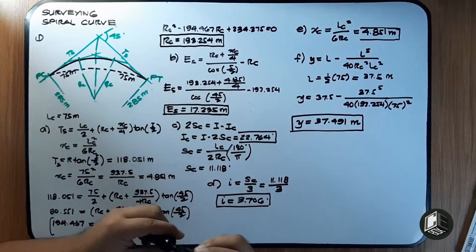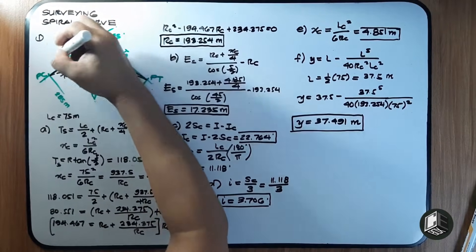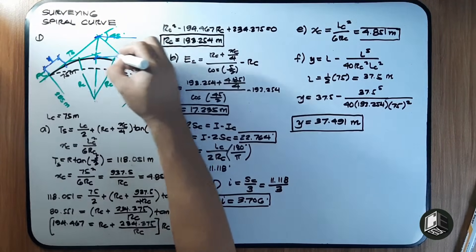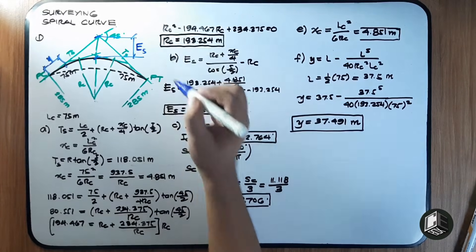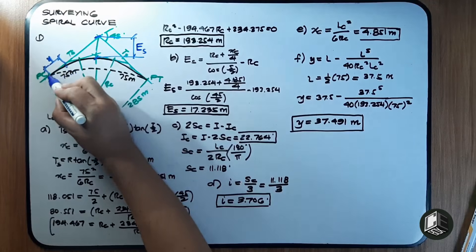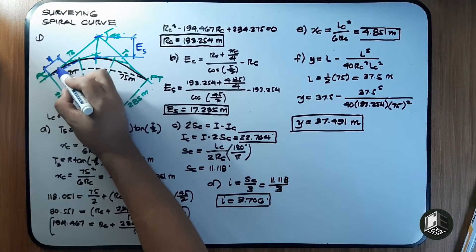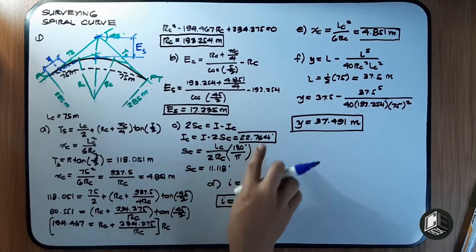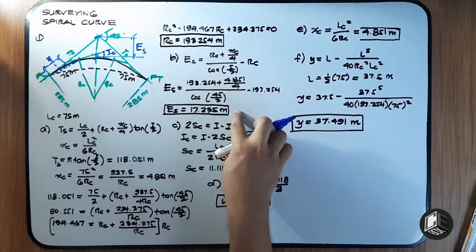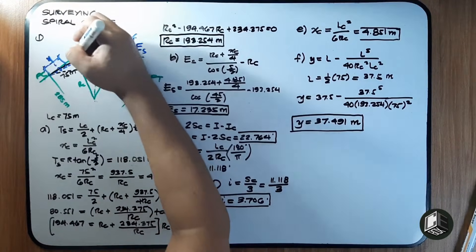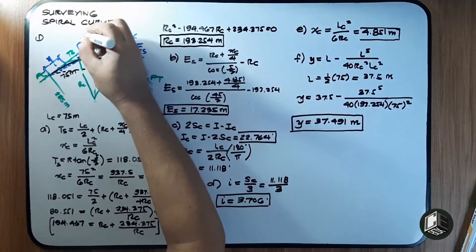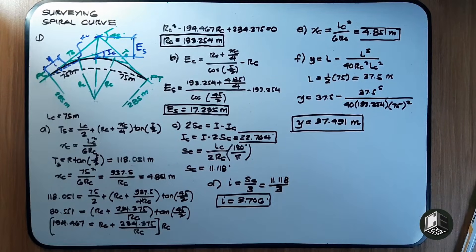Looking at the curve diagram, we can identify all computed values: y is the distance from the tangent at the midpoint of the spiral, the external distance Es is shown near the vertex, the deflection angle at the end of the spiral, the central angle ic, the radius Rc, and Xc at the end of the spiral. This concludes Example Number 1.